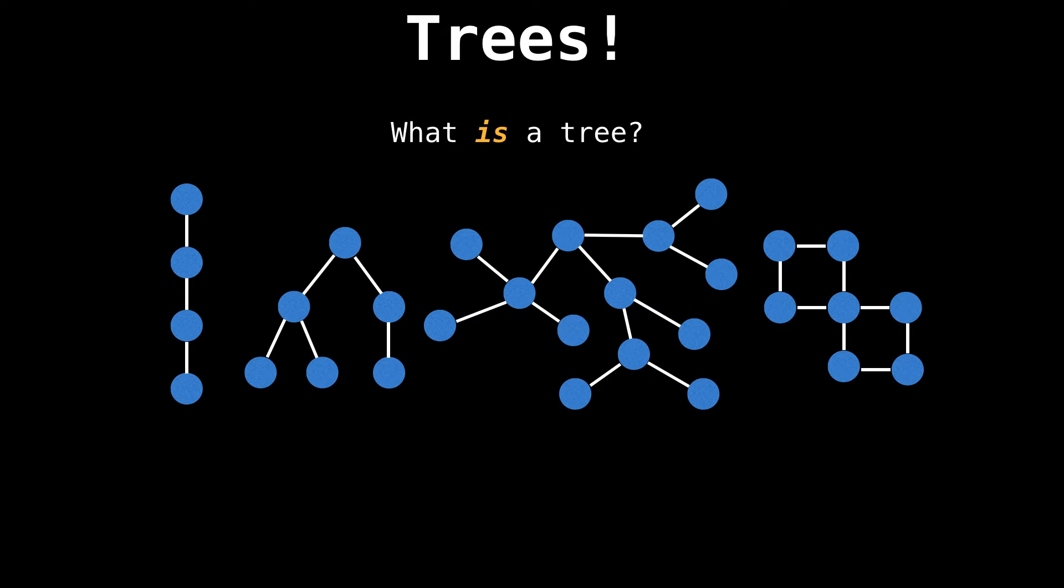Conceptually, it's fair to say that most people know what I mean when I say that I'm working with a tree or that something is structured as a tree. Below are four graphs, but one of them is not a tree. Do you know which one? Only the last graph is not a tree. But why is it not a tree?